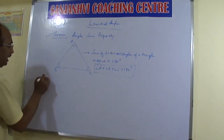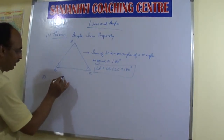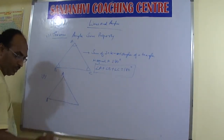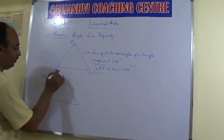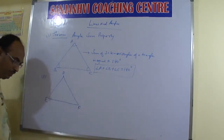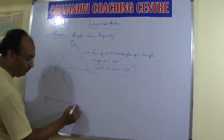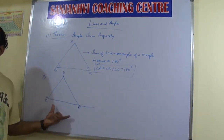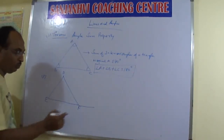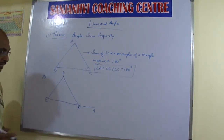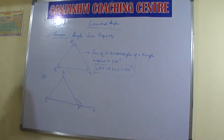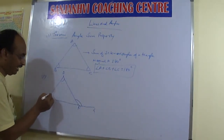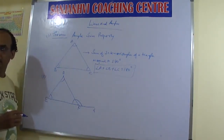The second theorem: if you have any triangle, I'll name it DEF. In this triangle, if you extend one side — say, extending EF to G — then one exterior angle is formed. This is called the exterior angle, and the angles inside the triangle are called interior angles.